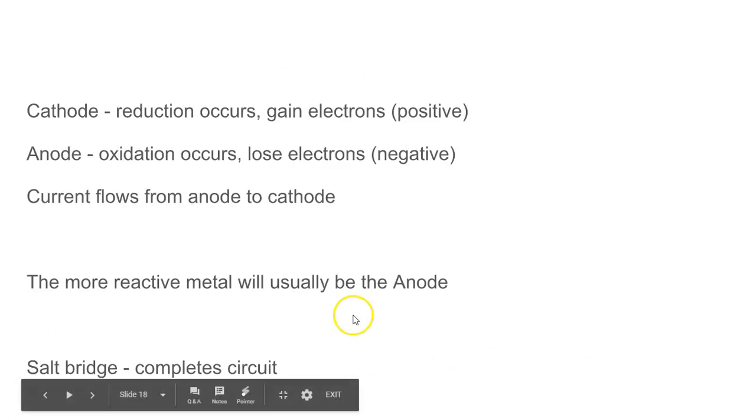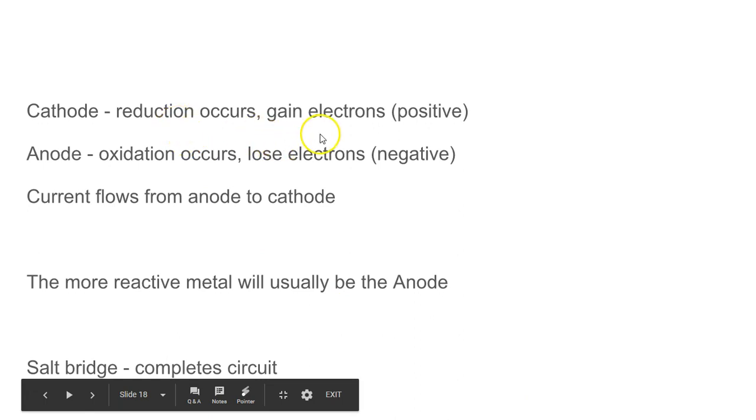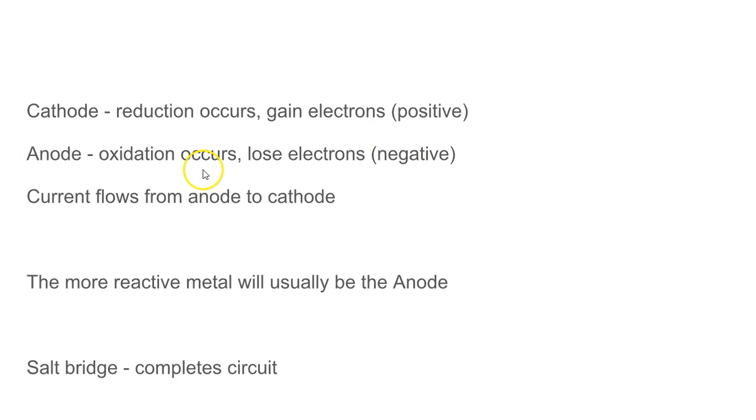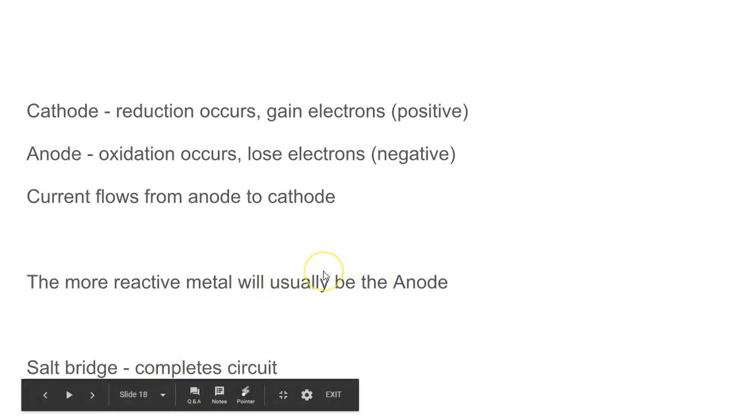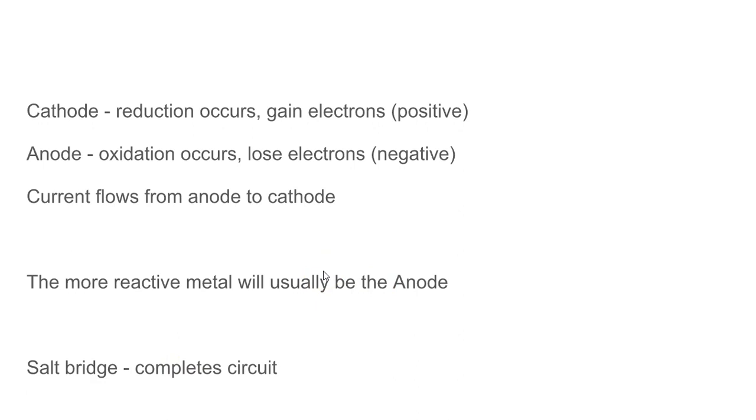And just a quick little recap, at the cathode, we've got reduction happening, it's gaining electrons, it's positive. At the anode, we've got oxidation happening, it's losing electrons, it's negative. And the current always flows from the negative to the positive side, from the anode to the cathode. The more reactive metal, according to your activity series, is going to be at the anode, and the purpose of the salt bridge is to complete the circuit. It replaces the lost ions in the solution.